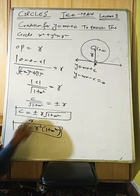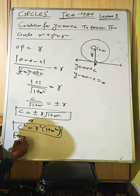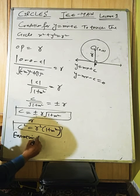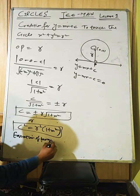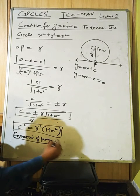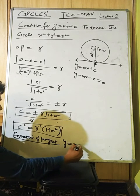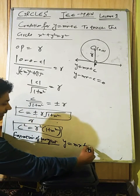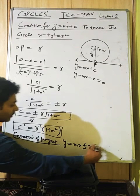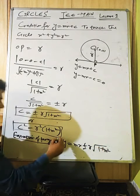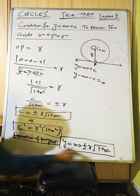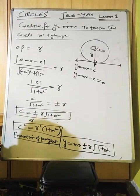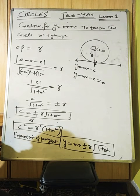Therefore the equation of tangent in slope form to the circle x² + y² = r² is: y = mx ± r·√(1+m²).